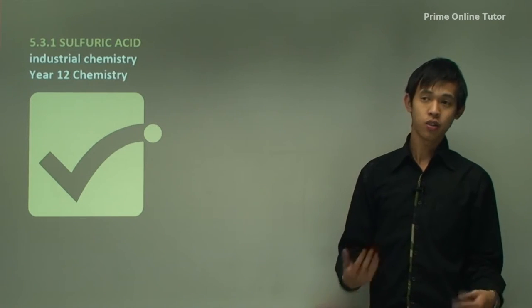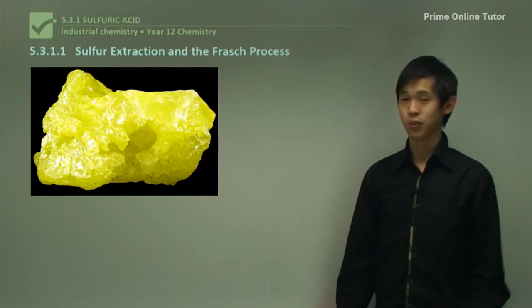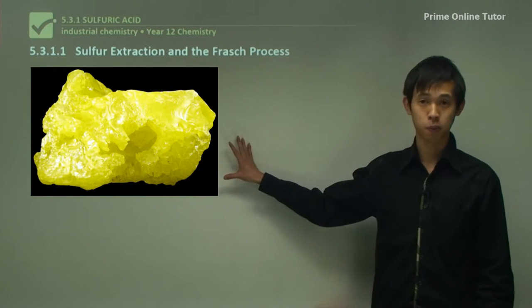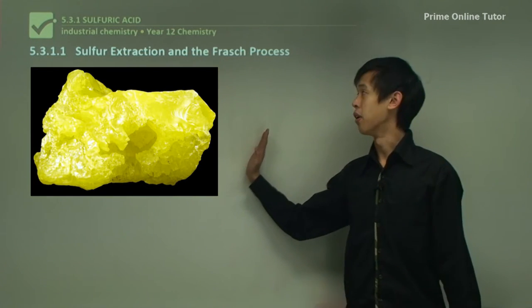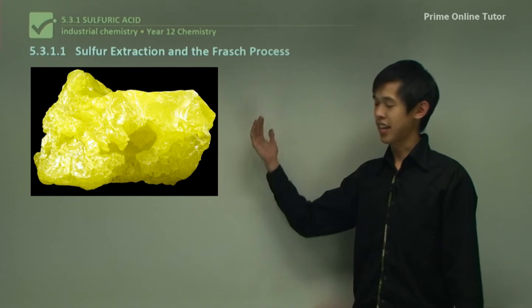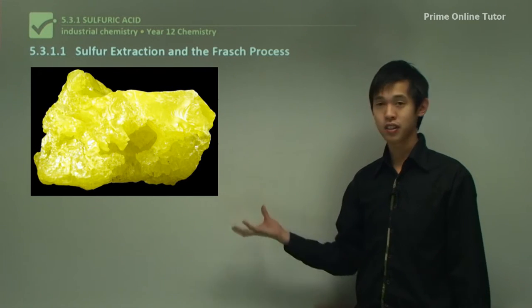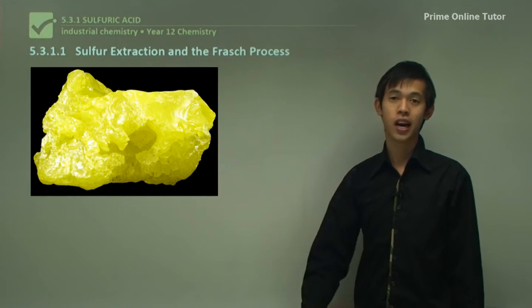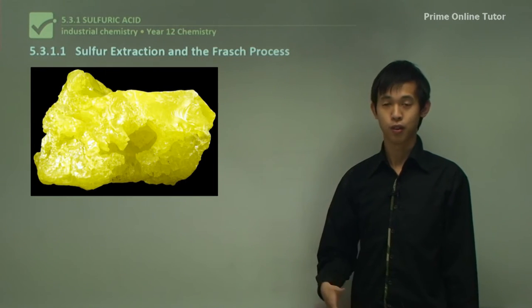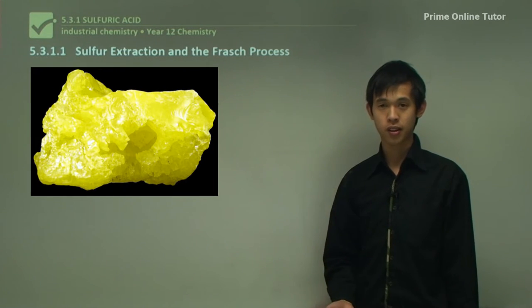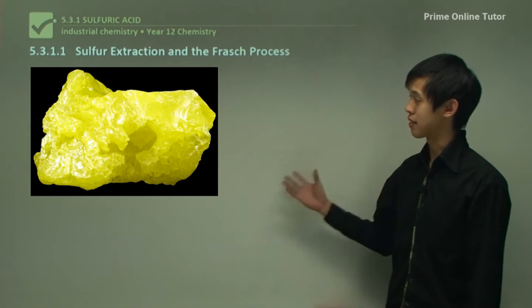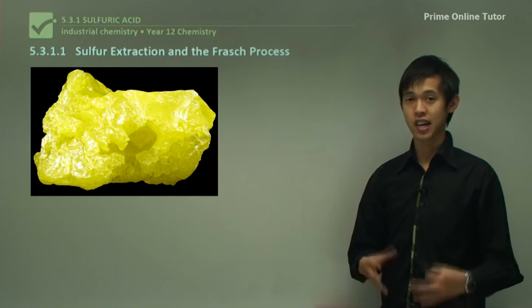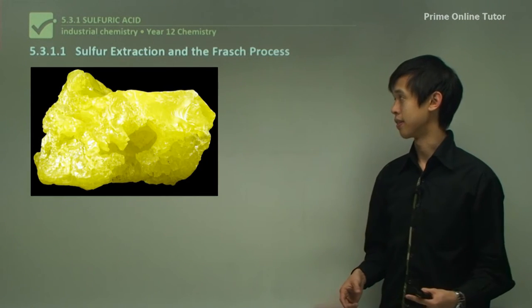In order to produce sulfuric acid we have to talk about where it comes from — the sulfur crystal, or in this case just a lump of pure sulfur. We want to know how we extract it so we can optimize that process, because it's the starting point for our sulfuric acid production.